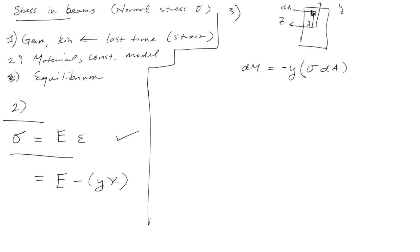Notice why this is negative: because if we have positive curvature and positive y, then we have compressive stress, which is a negative stress. So that's why this becomes negative. The total moment, this is the external force, has to be equal to the integral over the cross-section of dM, which then is equal to minus sigma y dA.